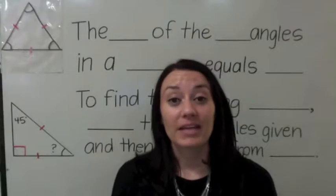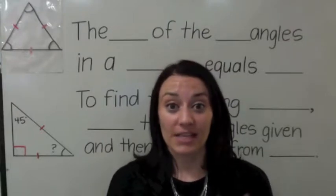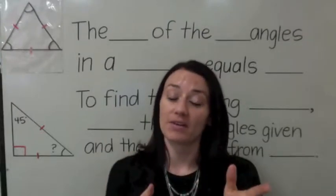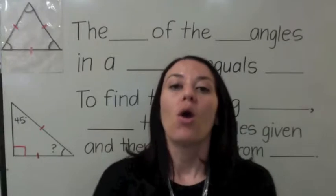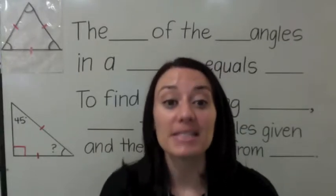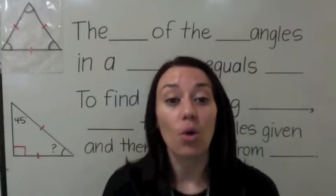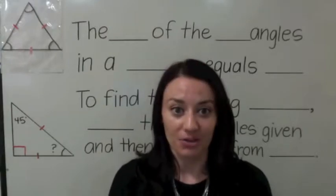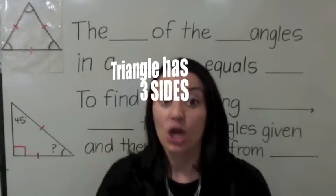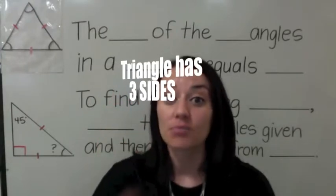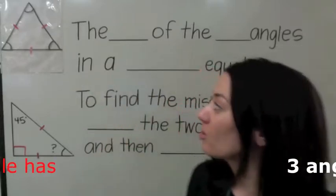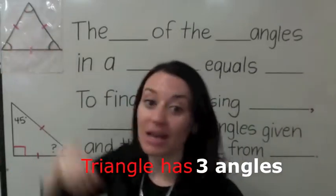Now that we've learned how to classify different types of triangles based on their angles and their sides, we're going to learn how to find a missing angle when given a triangle. A triangle has three sides and it also has three angles.